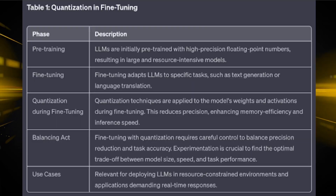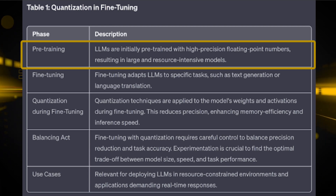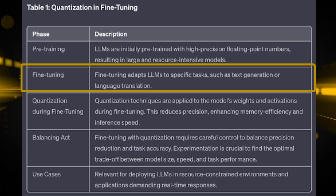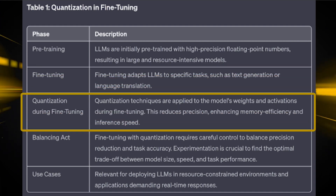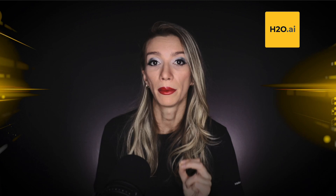Quantization can be applied during the fine-tuning stage of a pre-trained LLM. LLMs are initially pre-trained on vast amounts of text data, typically using high-precision floating-point numbers — these models are large and resource-intensive. After pre-training, LLMs are fine-tuned on specific tasks such as text generation or language translation. During fine-tuning, practitioners may apply quantization techniques to the model's weights and activations, reducing the precision of numerical values and making the fine-tuned model more memory-efficient and faster for inference across various devices.